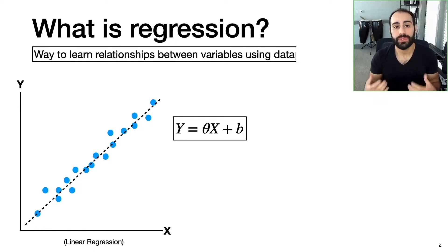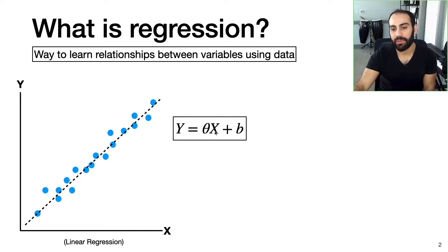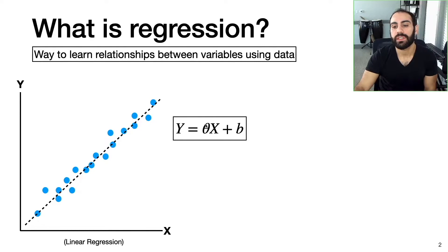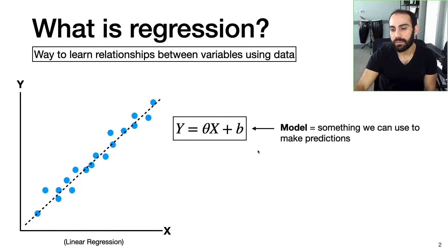In linear regression, we use data to develop a linear model between two or more variables. A super simple example is if we have a variable x and we want to find its linear relationship with another variable y, we can express the relationship through this equation: y equals theta x plus b. We know x and y, so through the regression process we learn values for theta and b that best fit our data. The result of a regression technique is what we call a model, which is something we can use to make predictions.